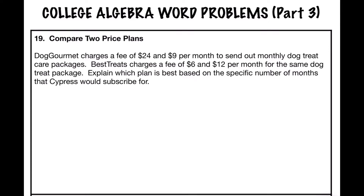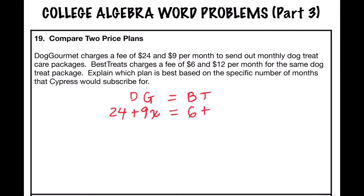We want to compare Dog Gourmet and set that equal to Best Treats, using the start value and rate of change. Dog Gourmet charges a flat fee — that's our start value of $24 — and we're going to add $9 for each month as our rate of change. For Best Treats, the start value is $6 and the rate of change is $12 per month.